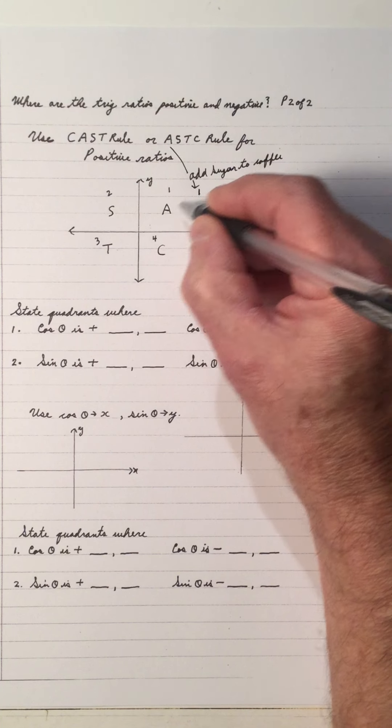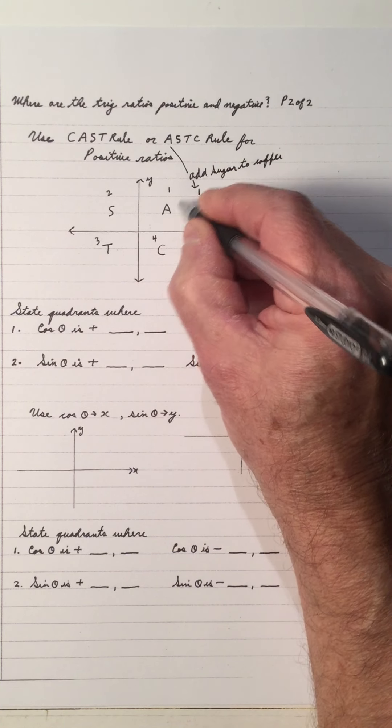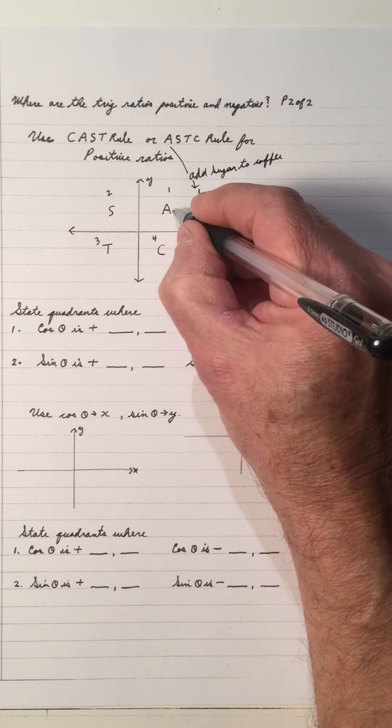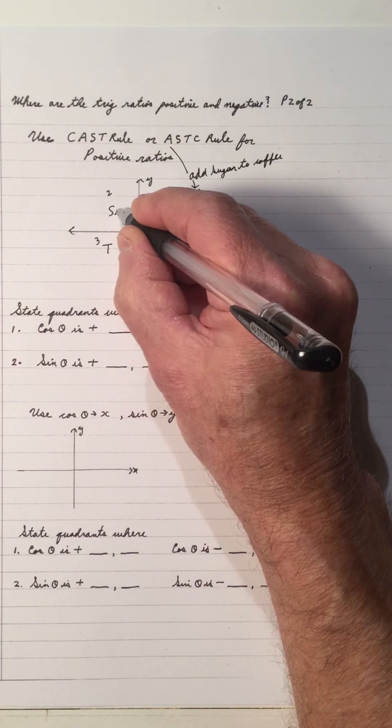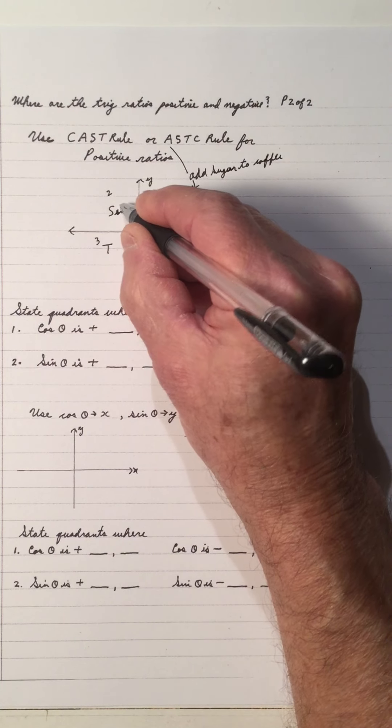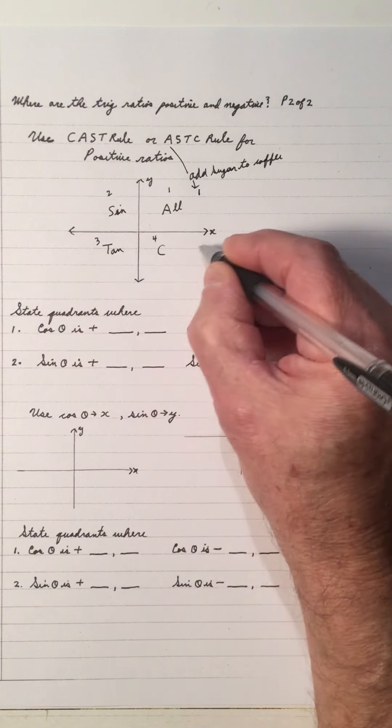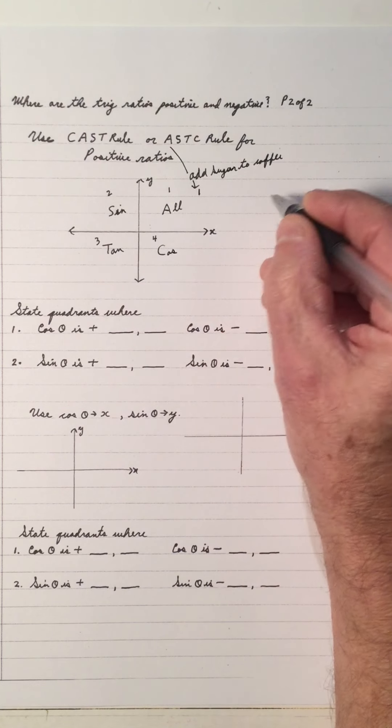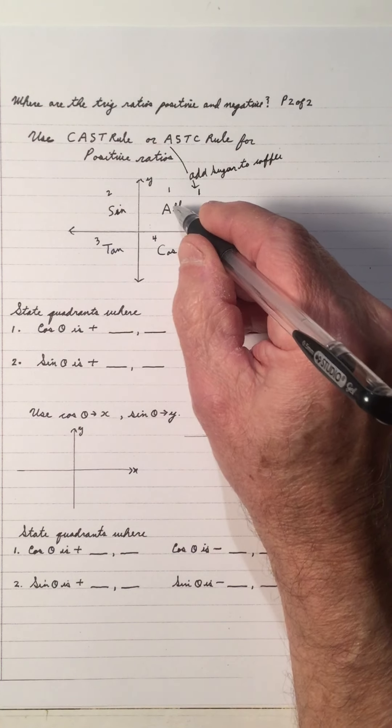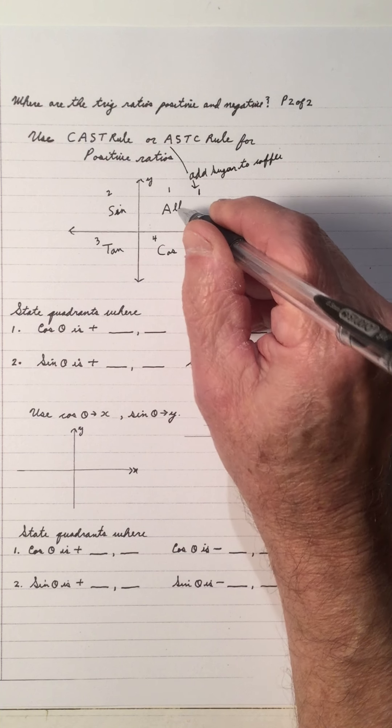ASTC, add sugar to coffee, starts in quadrant 1. And A stands for all, the S stands for sine, the T stands for tan, and the C stands for cos. These are positive trig ratios.